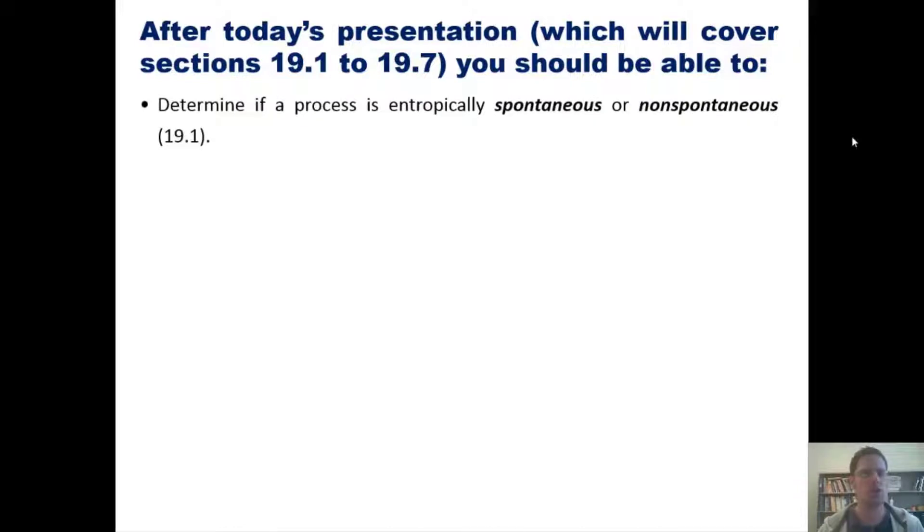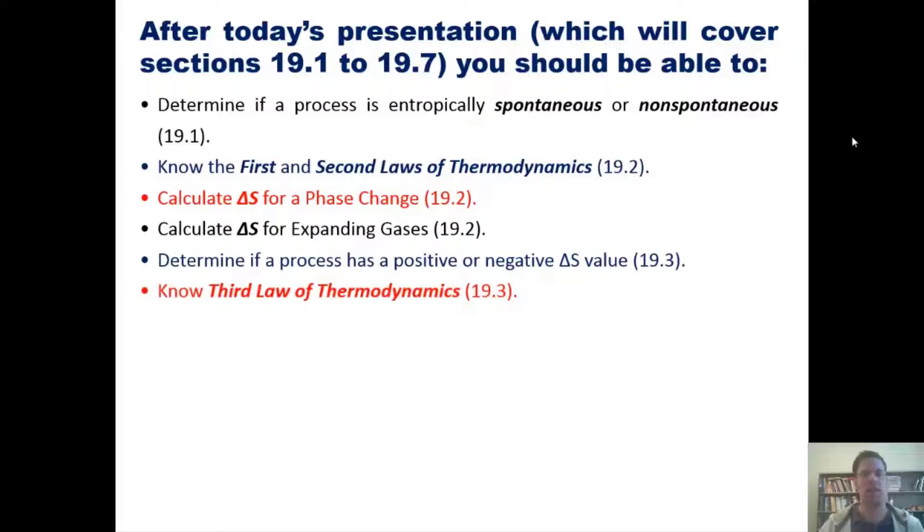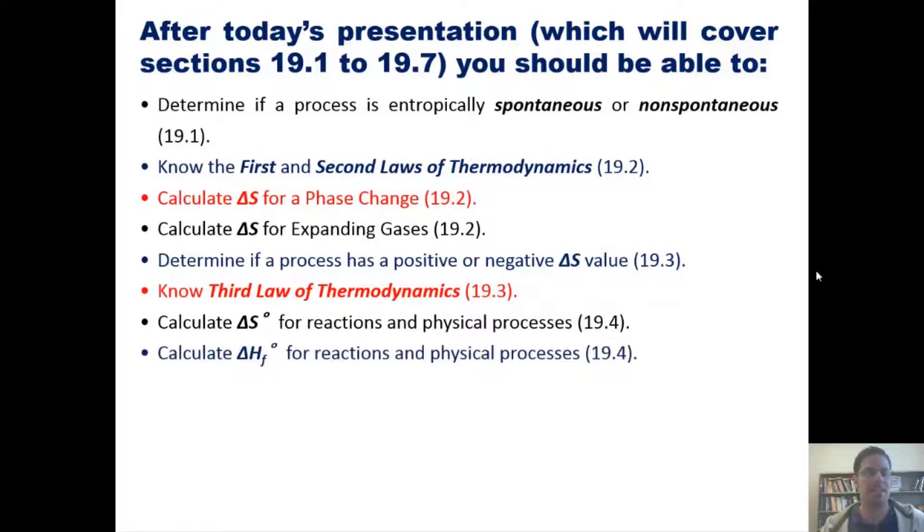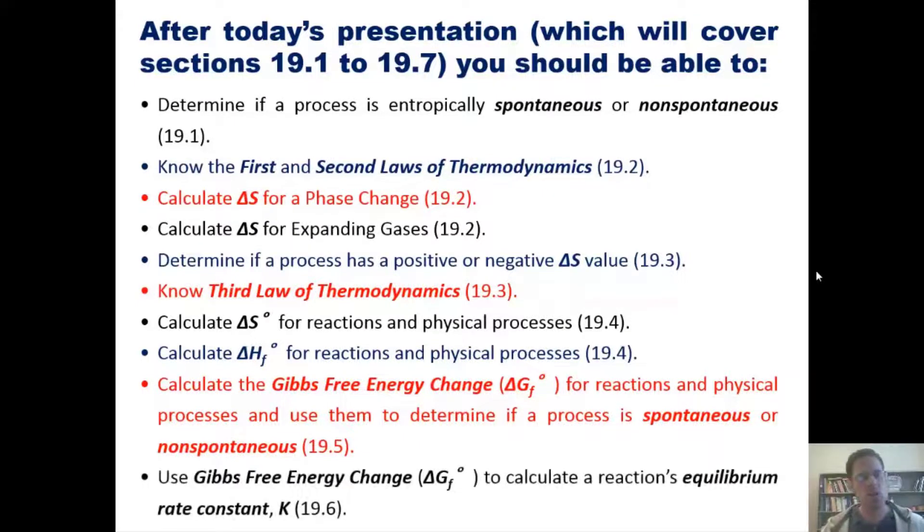Determine if a process is entropically spontaneous or non-spontaneous, know the first and second laws of thermodynamics, calculate delta S for a phase change, calculate delta S for expanding gases, determine if a process has a positive or negative delta S value by looking at it, know the third law of thermodynamics, calculate delta S naught for reactions and physical processes, calculate delta H_f naught or the enthalpy of formation for reactions and physical processes, calculate the Gibbs free energy change or delta G_f naught for reactions and physical processes and use them to determine if a process will be spontaneous or non-spontaneous, and use Gibbs free energy change to calculate a reaction's equilibrium rate constant or K.